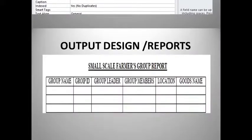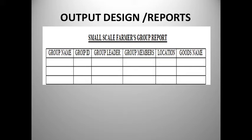Then we go to output designs. This is where you draw your reports. Output designs are reports, so you just draw your empty reports showing their structure. For example, here we have group name, group ID, group leader, group members, location, and goods. To summarize: in Milestone 1, you have input design, output design, and table design — all done in this milestone.